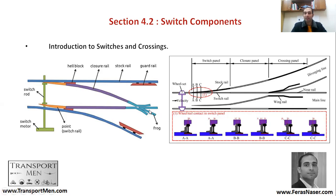Those are the basic components. You need to remember: the point machine, the switch, the switch rod or lock stretcher bar, the stock rail, the switch rail, the guard rail, and the wing rail — among others. These are very important to remember.